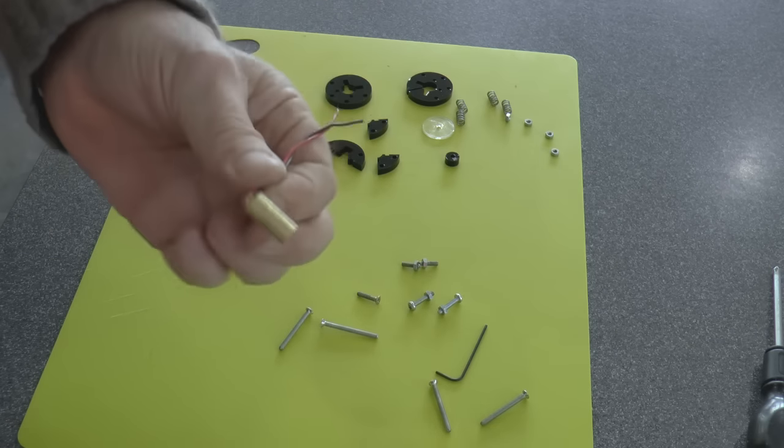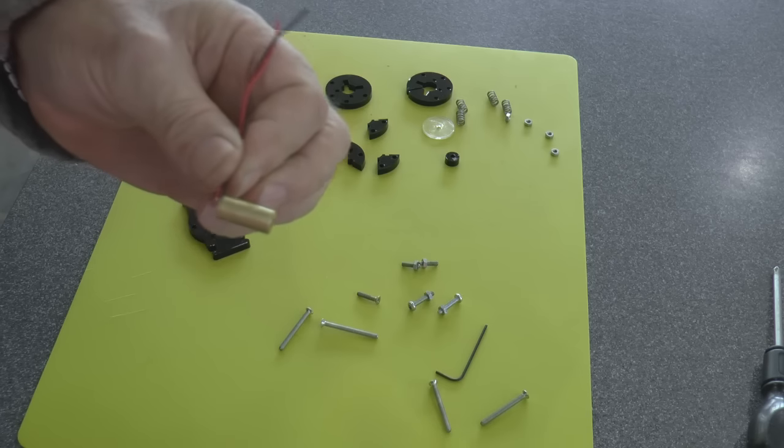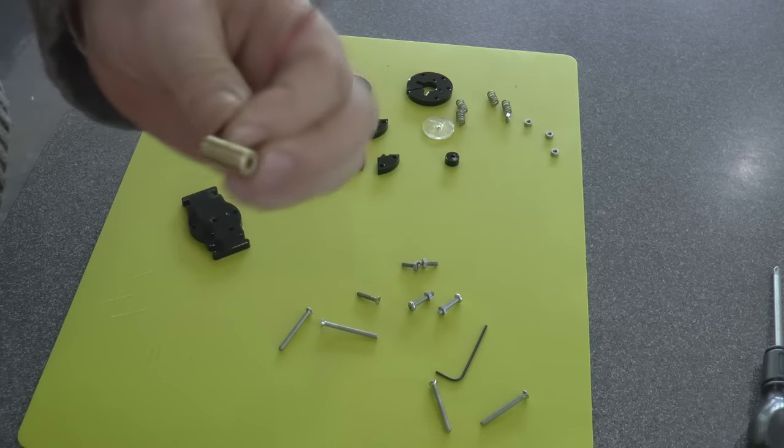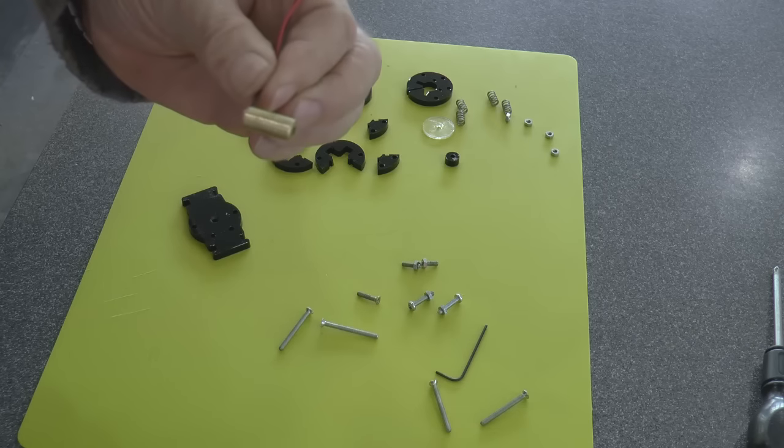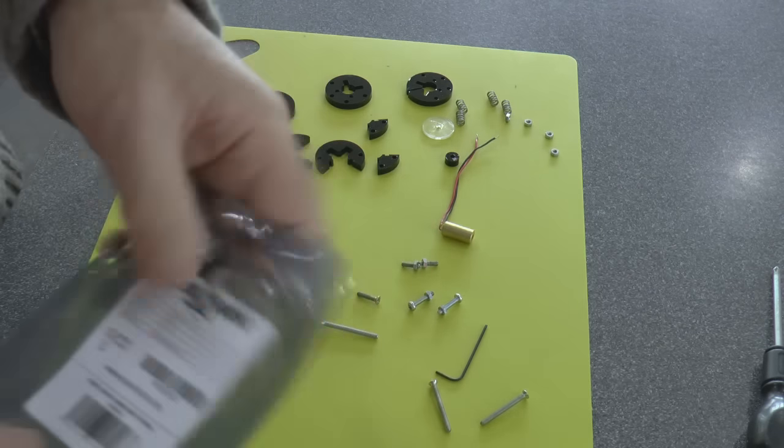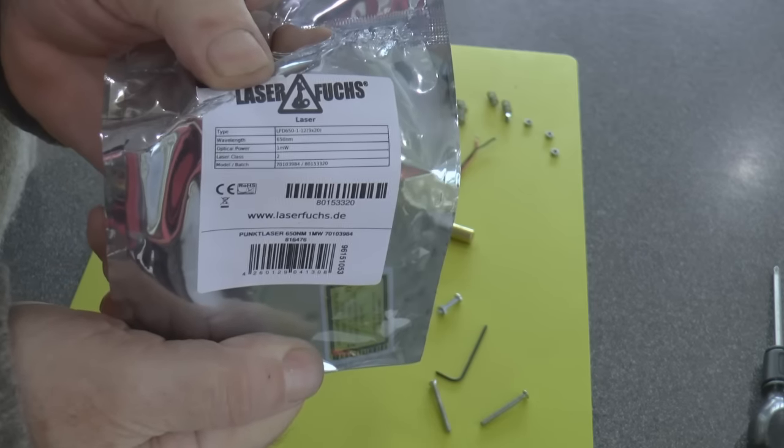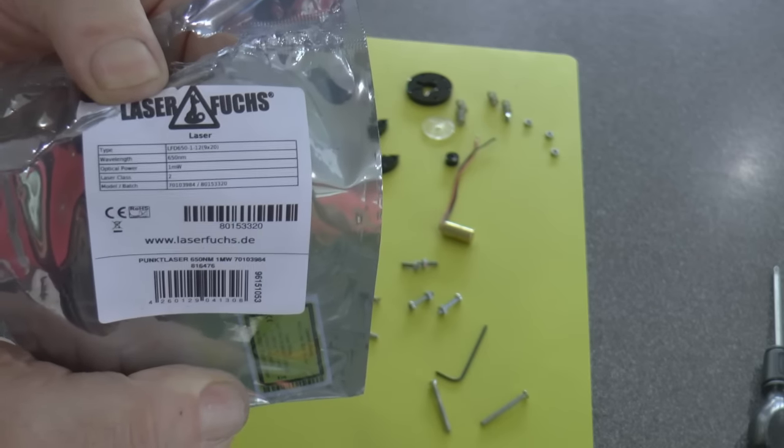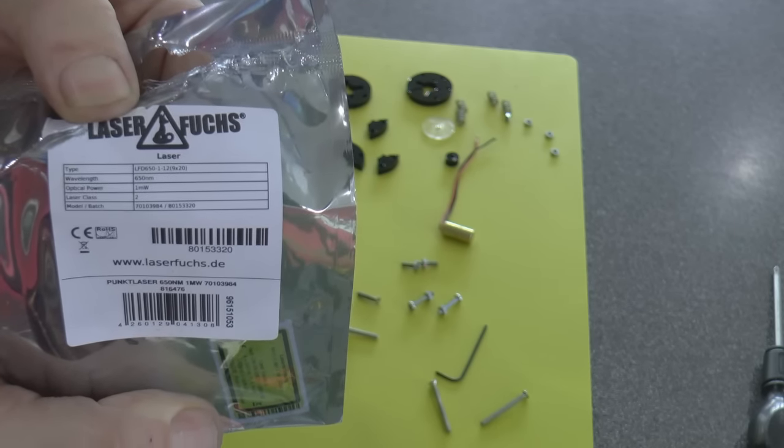What I've been able to buy here very cheaply, probably about seven or eight pounds or ten to twelve dollars, is a laser pointer. This is a little module supplied by a German company called Laserfux. You can probably look them up online and see if you've got a distributor in your country.